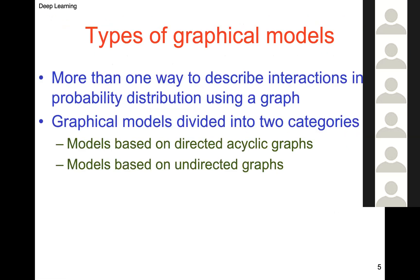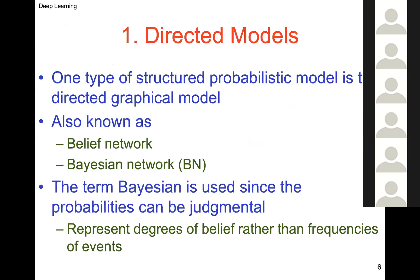There are two types of graphical models: directed acyclic graphs, also called Bayesian networks, and models based on undirected graphs, also known as Markov networks. Directed models are sometimes called belief networks or Bayesian networks. The term 'Bayesian' is used because probabilities can be judgmental — not necessarily based on frequency of occurrence — and can incorporate priors to capture dependencies.